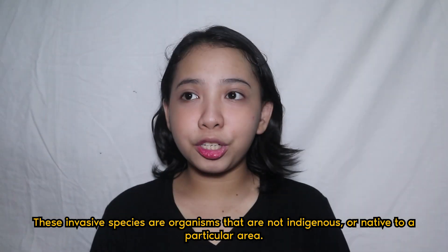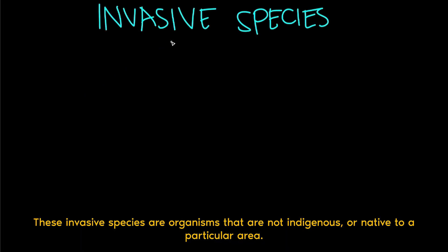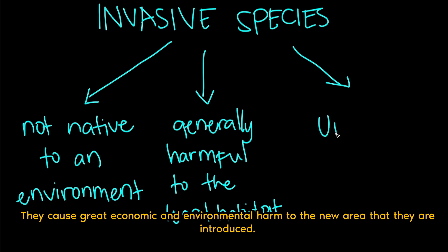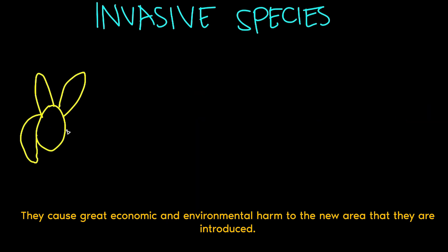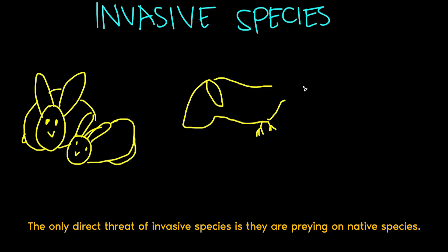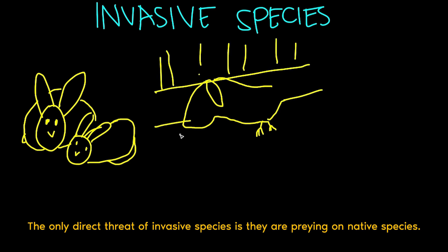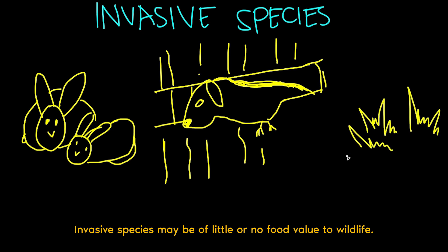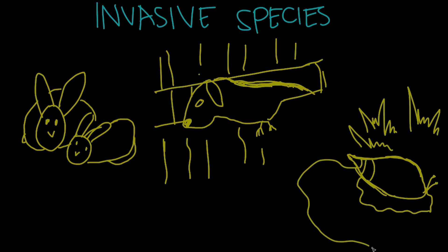Invasive species are organisms that are not indigenous or native to a particular area. They cause great economic and environmental harm to the new area they are introduced to. They can change the food web in an ecosystem by destroying or replacing native food sources. The most direct threat of invasive species is that they prey on native species, and may be of little or no food value to wildlife.